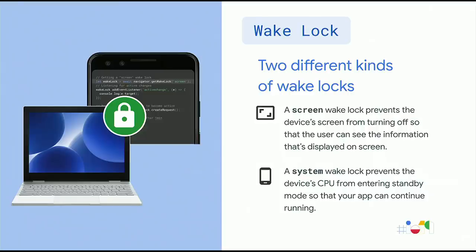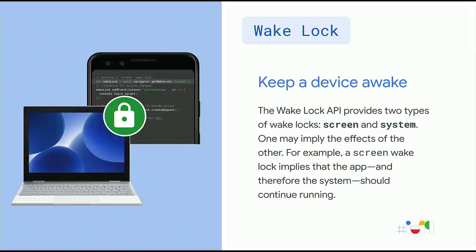The API also aims to reduce the need for hacky and potentially power-hungry workarounds like looping an invisible video to keep the screen on. The Wake Lock API provides two types of wake lock — screen and system. The screen wake lock prevents the device from turning the screen off so that the user can see the information displayed on the screen. A system wake lock prevents the device's CPU from entering standby mode so that your app can continue running. And a screen wake lock implies that the app, and therefore the system, should continue running.